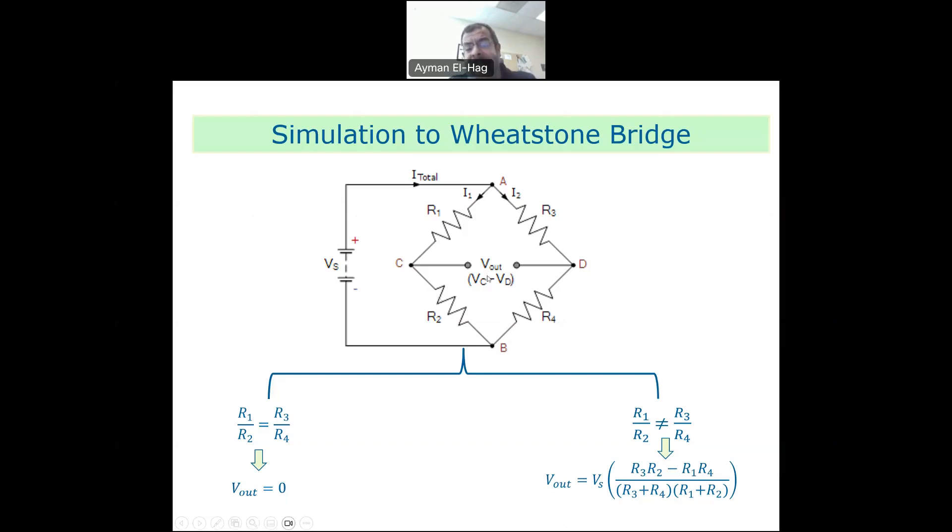Now, if R1 over R2 doesn't equal to R3 over R4, then we will have this formula for Vout in terms of Vs, R1, R2, R3, and R4.